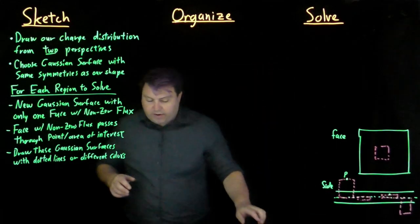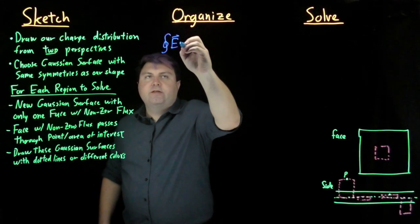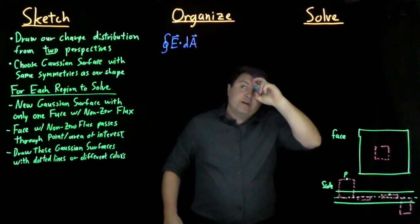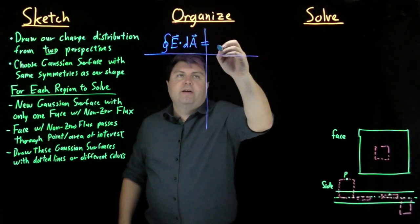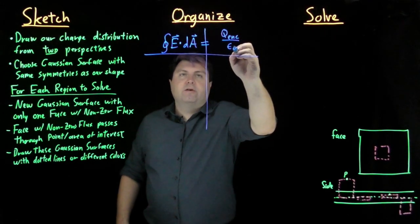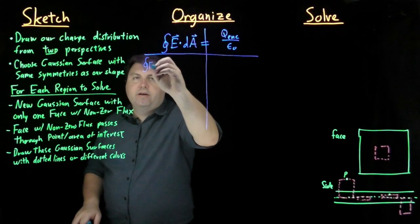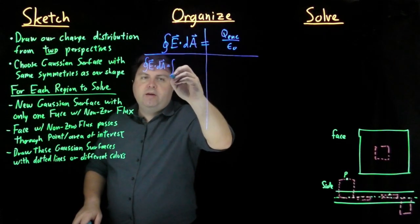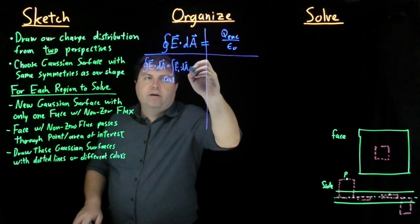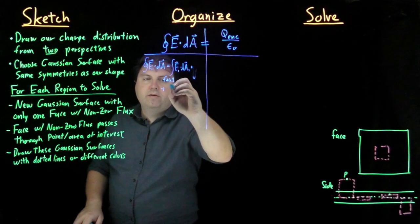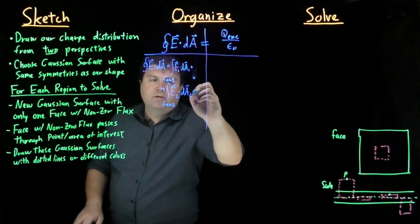So in our organized step, we have our Gauss's law. Our Gauss's law has two sides to it. So we really want to approach both sides. We have the closed integral of E dot dA, and that's equal to the charge enclosed over epsilon naught. So over on this side, when we say closed integral of E dot dA, we mean the integral over face one of the electric field at one dotted with the dA1 plus the integral over face two of the electric field at two dotted with the dA2, and so on and so forth.